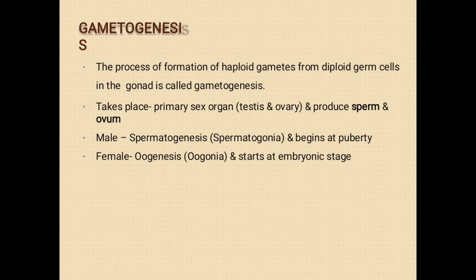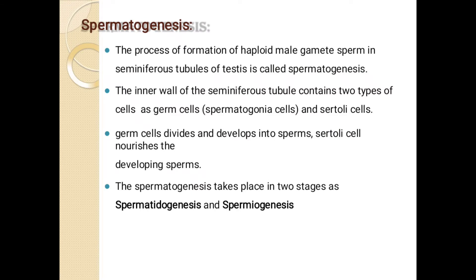In male, the gametogenesis means the formation of gametes — the process of sperm formation is known as spermatogenesis. Spermatogenesis begins at puberty and oogenesis starts at the embryonic stage. Now we are going to learn about spermatogenesis — haploid male gamete formation from diploid germ cell. The process of formation of haploid gamete sperm in seminiferous tubules of testes is known as spermatogenesis.